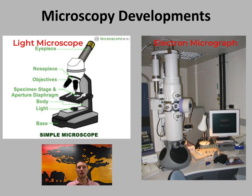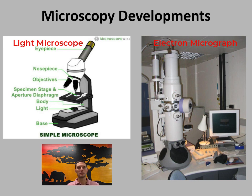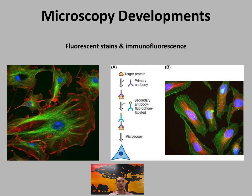Electron microscopes allow much smaller objects to be viewed — you can actually see individual organelles within cells and their structures. Some negatives are that they typically end up killing the specimen, and the images produced are black and white. It is possible to use staining or post-image computer software editing to apply colors to distinguish different components. There have been a number of developments in microscopy that have allowed us to see different components of cells even better than standard electron micrographs.